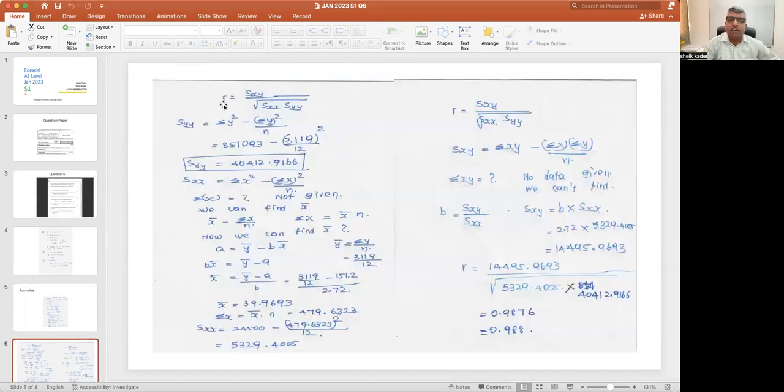Now we will solve the question. What is our PMCC? The formula is sxy over square root of sxx times syy. First we will find syy because all the data are given. Sigma y squared minus square of sigma y over n.